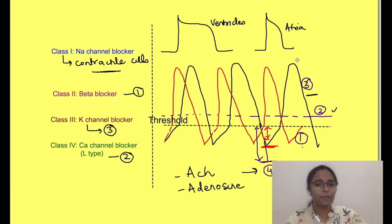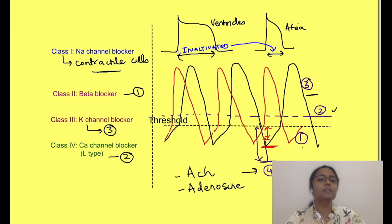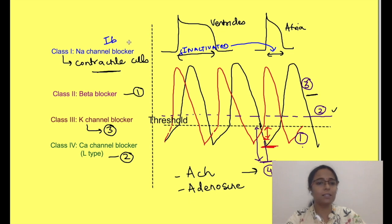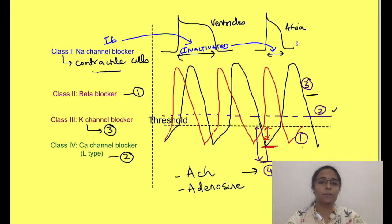The duration of action potential of atria is much less than that of ventricles, meaning that in ventricles the channels remain in the inactivated state for longer. As channels change state, the drugs dissociate from them — so drugs are active only while the channel is in that particular state. Therefore these drugs are more effective for ventricular arrhythmias because in ventricular action potentials channels are in the inactivated state for longer. Class 1A drugs, on the other hand, are used for atrial fibrillation.